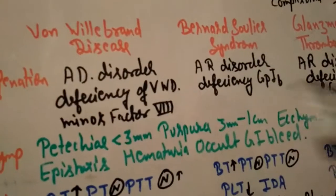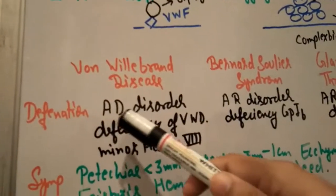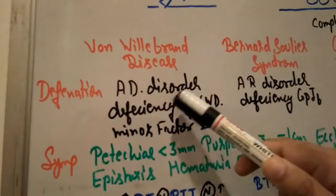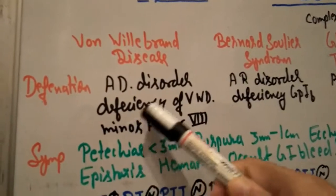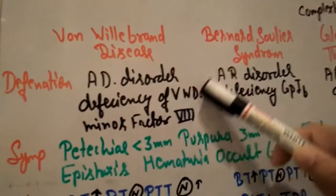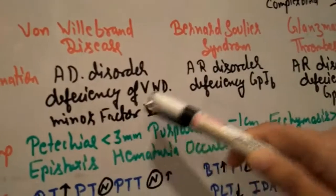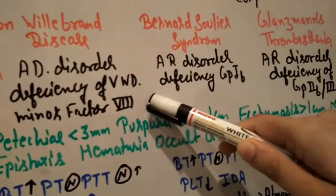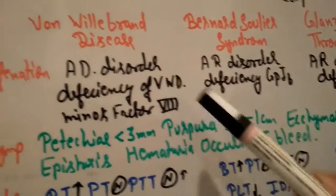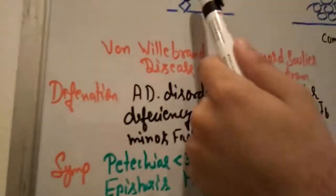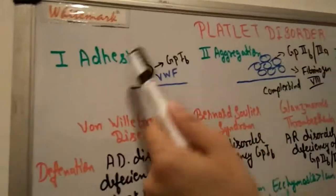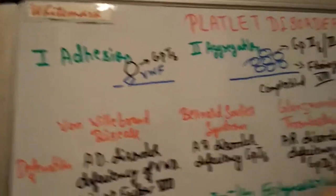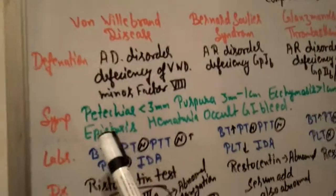The definition of von Willebrand disease: It is an autosomal dominant disorder with deficiency of von Willebrand factor and minor factor 8 deficiency. There is bleeding because there is no platelet aggregation. Adhesion occurs, but no aggregation and no stabilization occur, so blood loss is high.